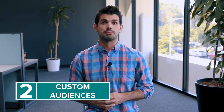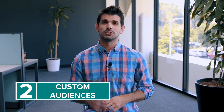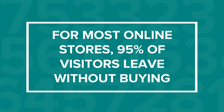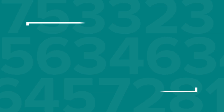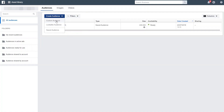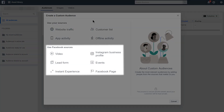A custom audience is a more specific group of people who have already engaged with your content — these are the ones you use for retargeting. For most online stores, 95% of visitors leave without buying. Retargeting means reminding your potential customers that they have unfinished business with your shop. The average return on investment on retargeting ads is 200% — for every $10 you spend on your ads, you will get at least $20 back. It works because it's easier to convert people who already know your brand. The data Facebook and Instagram collects for you includes what percentage of a video they've seen, whether they've interacted with your page, attended events, and more — almost no setup is needed as data is collected automatically.